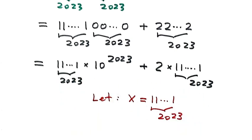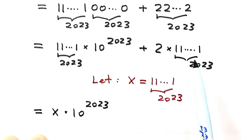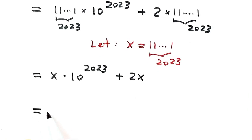So now let's continue with this equal sign. Then here just X times 10 to the power of 2023. Then this part just 2x, plus 2x. Now let's take out the common factor X. We have 10 to the power of 2023, then plus 2.